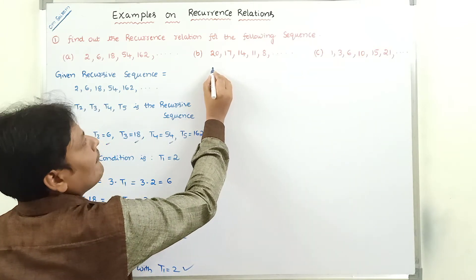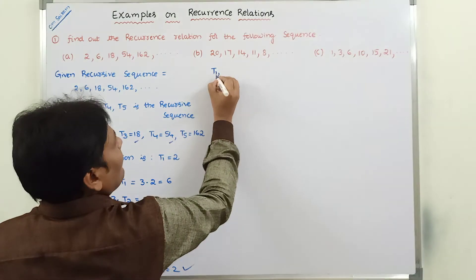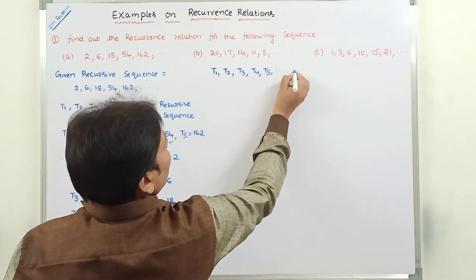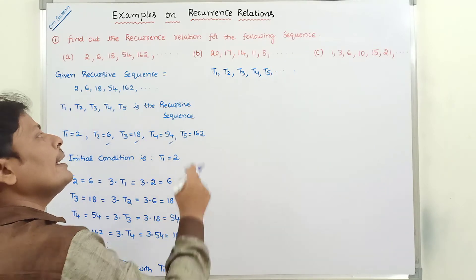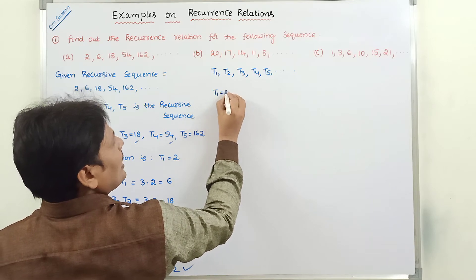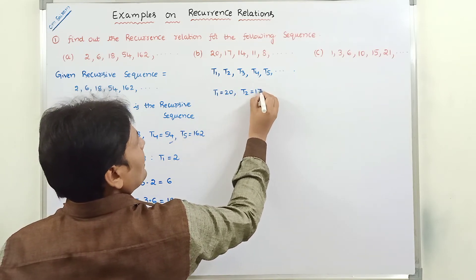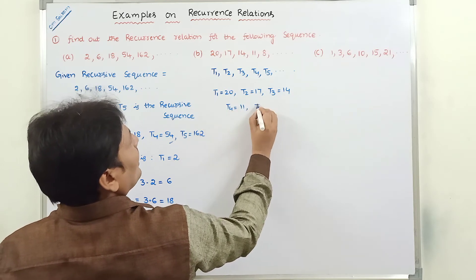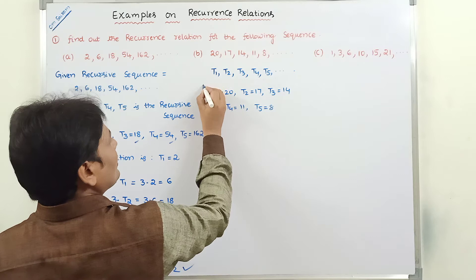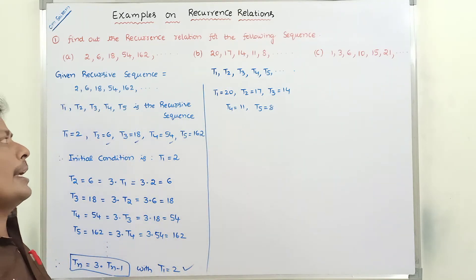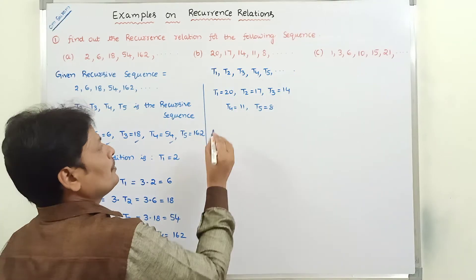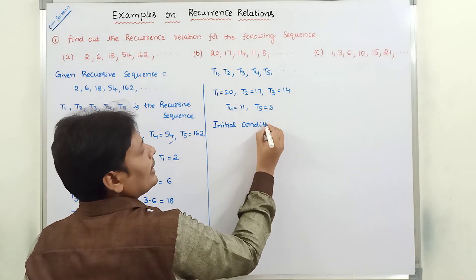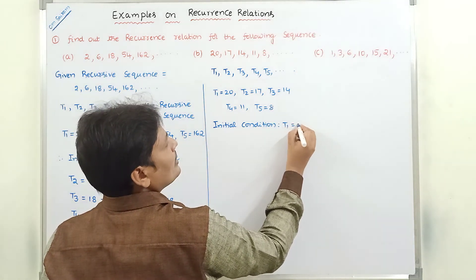Now for the second problem. The terms of the given recursive sequence are T1, T2, T3, T4, T5. Comparing with the given sequence: T1 = 20, T2 = 17, T3 = 14, T4 = 11, T5 = 8. The initial condition is T1 = 20.